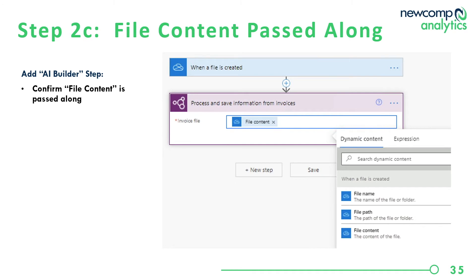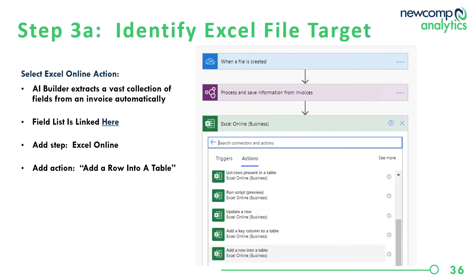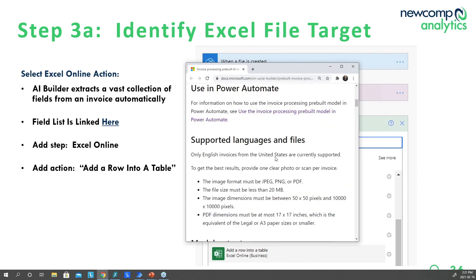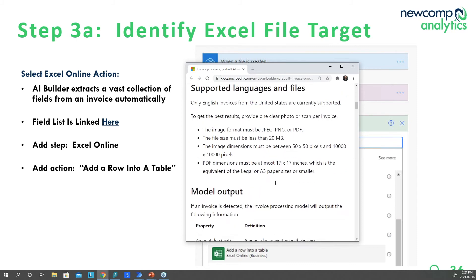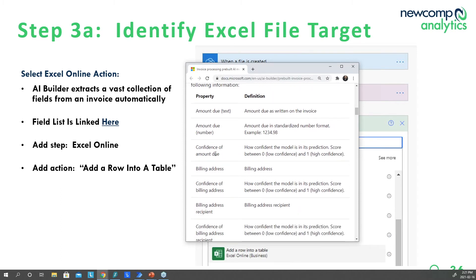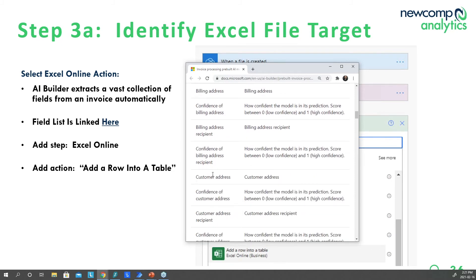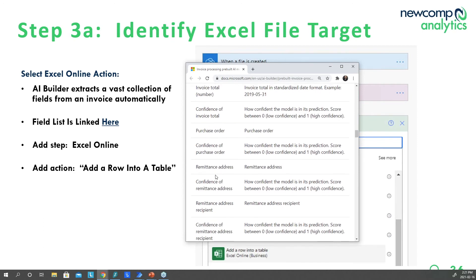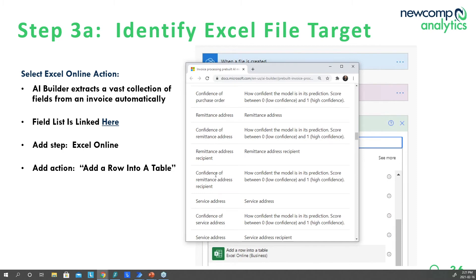We're going to select the invoice processing option and feed our invoices to AI Builder. The previously completed 'when a file is created' step passes the file content to AI Builder. AI Builder's capabilities are very impressive — here's a quick look at some of the fields it extracts: amounts, billing addresses, customer address, customer numbers and names, vendor numbers and names, and invoice dates. Each of these fields will be identified if present in the invoice and will be available for any downstream processes in Power Automate.